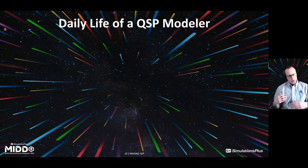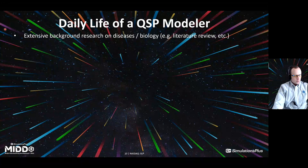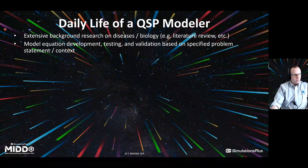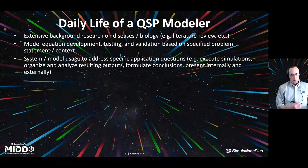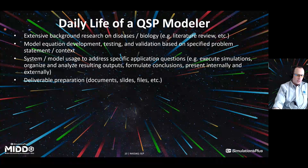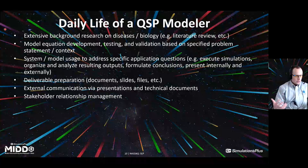Now you've trained and migrated — you're thinking about starting a QSP career or you're in the midst of one. What does daily life look like? It involves extensive background research on diseases and biology — you'll always have to do that to really understand what you're modeling and why. It involves development of equations and models, but also testing and validation. Depending on the specified problem statement and the company you're working for, you may be doing more validation versus development. And then there's the application — QSP modeling arose out of the need for application, so it's really about using the models to answer questions, analyzing results, formulating conclusions, and then presenting that. There's deliverable preparation: documents, slides, and files; external communication with presentations and technical documents and regulatory formatting.